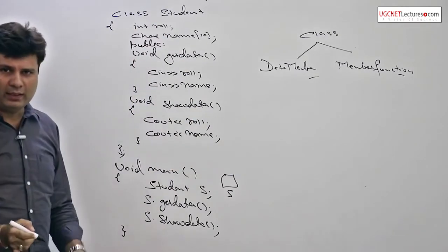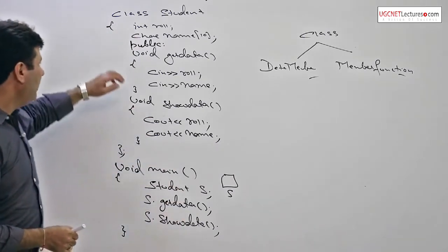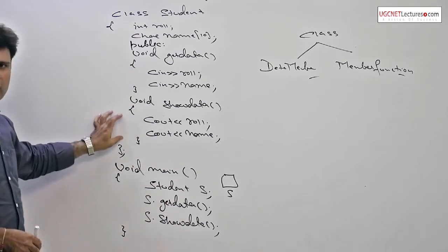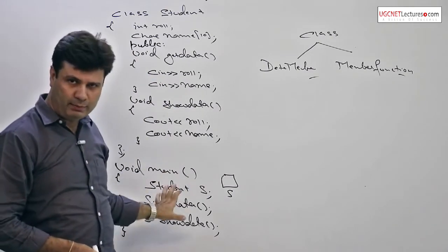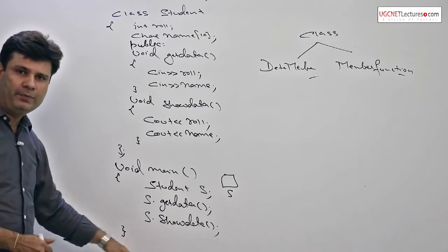By using a keyword public, the moment I write public over here, the get data and show data will be defined as publicly, which can be easily accessed from outside a class.